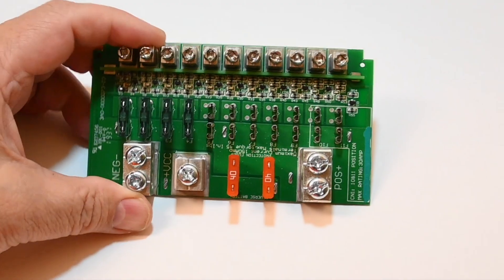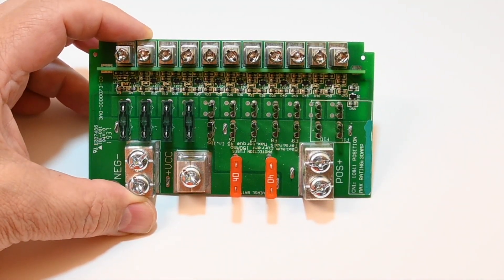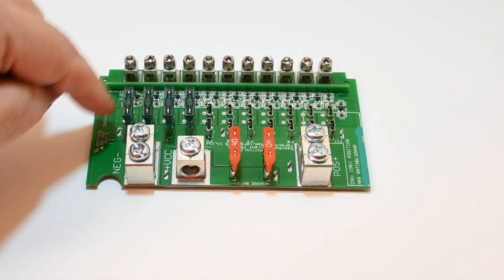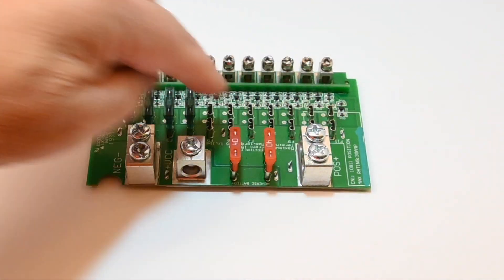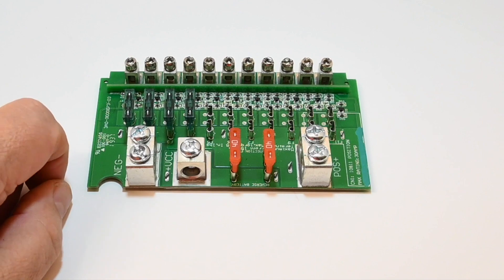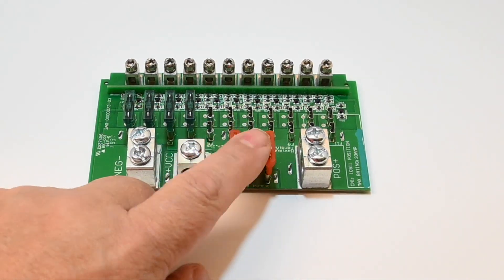This is actually the distribution board from a WFCO distribution panel and there are spots for 11 circuits across here. These first four I have fuses in and also there are fuses to the battery.